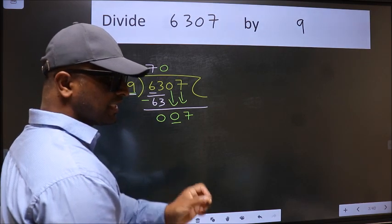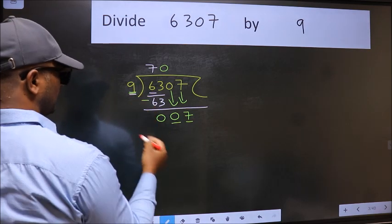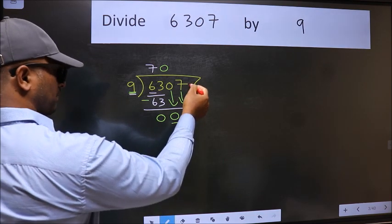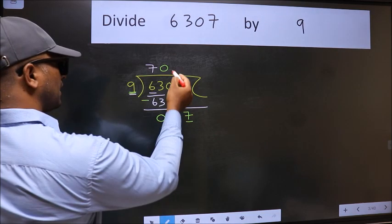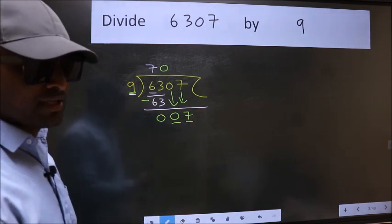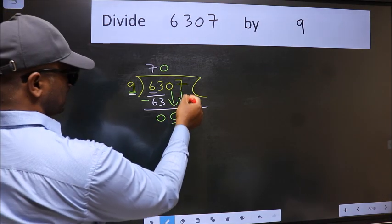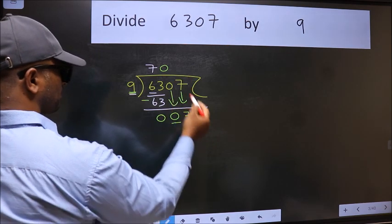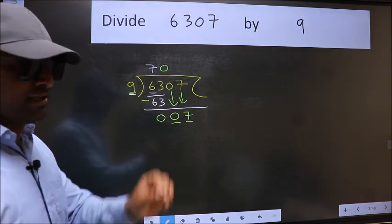And the mistake is this: here we have 7 and here 9. 7 is smaller than 9 and we don't have any more numbers to bring down. So what many do is they directly put dot, take 0, which is wrong. Why is it wrong? Because just now you brought this number down, and in the same step you want to put dot, take 0, which is wrong.